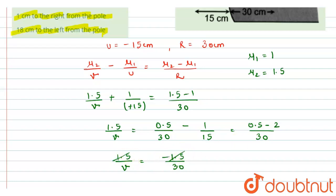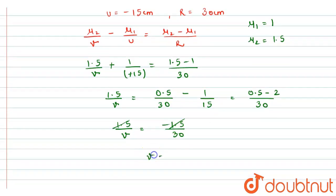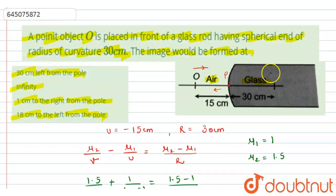So this 1.5 will cancel out and we will get v equals to minus 30 centimeter. Now see, the image will be formed at 30 centimeter and this negative sign represents that it would be on the left of the pole. So this is the pole and minus 30 centimeter would be somewhere at this point. At this distance of 30 centimeter the image will be created from the pole on the left side.